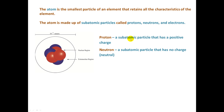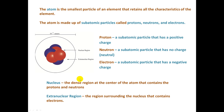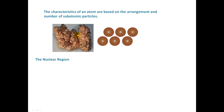A proton is a subatomic particle that has a positive charge. A neutron is a subatomic particle that has no charge — we say that it's neutral. An electron is a subatomic particle that has a negative charge. The nucleus is the dense region at the center of the atom that contains the protons and neutrons. The electrons reside in the extra-nuclear region, which surrounds the nucleus. That region is mostly empty space, but it accounts for most of the volume of the atom, whereas the nucleus contains most of the mass. The characteristics of an atom are based on the way that the subatomic particles are arranged and also on the number of subatomic particles.